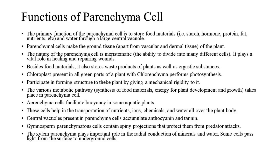The primary function of the parenchyma cell is to store food materials — starch, hormones, proteins, fats, nutrients, etc. — and water through a large central vacuole. Parenchyma cells make the ground tissue of the plant, apart from vascular and dermal tissue. The nature of the parenchyma cell is meristematic, meaning it has the ability to divide into many different cells, and it plays a vital role in healing and repairing wounds. Besides food materials, it also stores waste products of plants as well as ergastic substances.